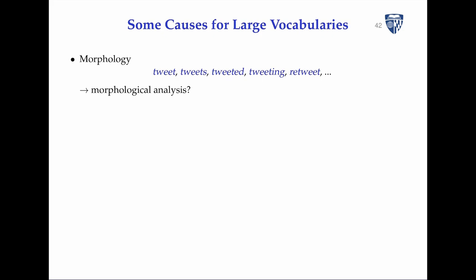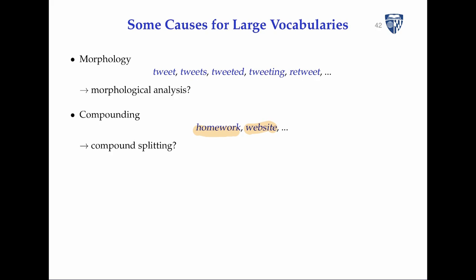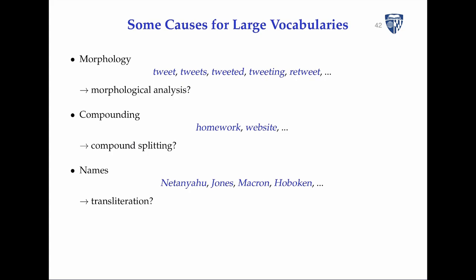Morphology is one cause of large vocabularies — 'tweet' spawns 'tweets', 'tweeting', 'retweets', all following morphological patterns. Compounding in German, Finnish, and Turkish makes this even worse. For names, you might just copy them to the output, but that doesn't work if the output uses a different writing system. Translating names into Hindi or Hebrew script requires learning a model to convert names between writing systems — this is called transliteration.